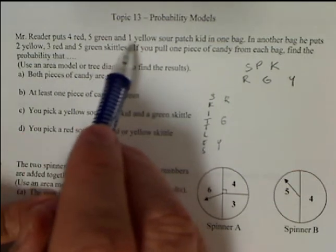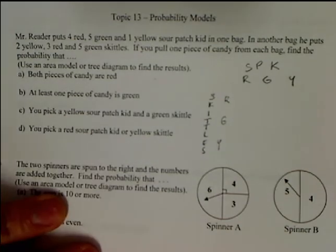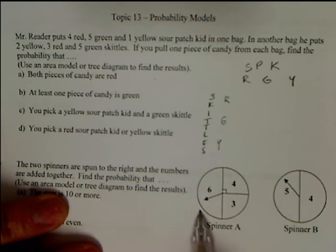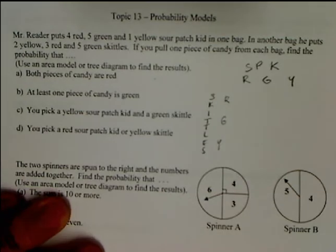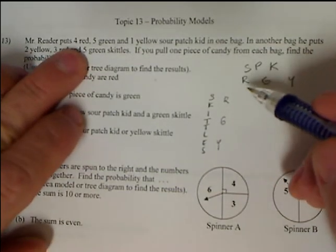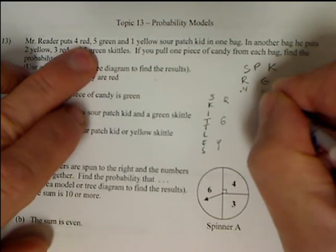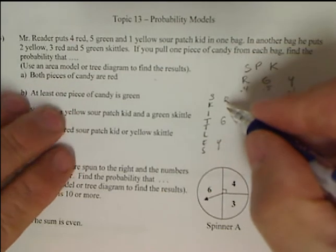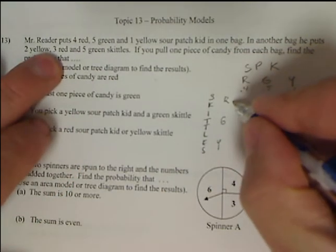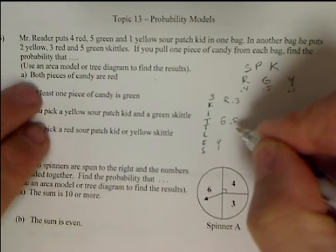We have ten different Sour Patch Kids, and on the other one we have ten different ones for the Skittles. I'm going to use decimals on this one. For the Sour Patch Kids: four out of ten are red, so that's 0.4; green is five out of ten, or 0.5; yellow was 0.1. For the Skittles: three red, so that's 0.3; five green, so that's 0.5; and two yellows, 0.2.